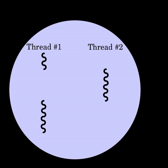Thread crashes a process: an illegal operation performed by a thread crashes the entire process. Therefore, one misbehaving thread can disrupt the processing of all the other threads in the application.